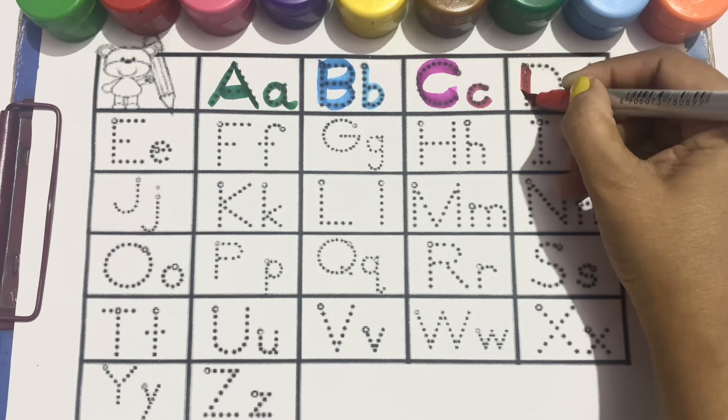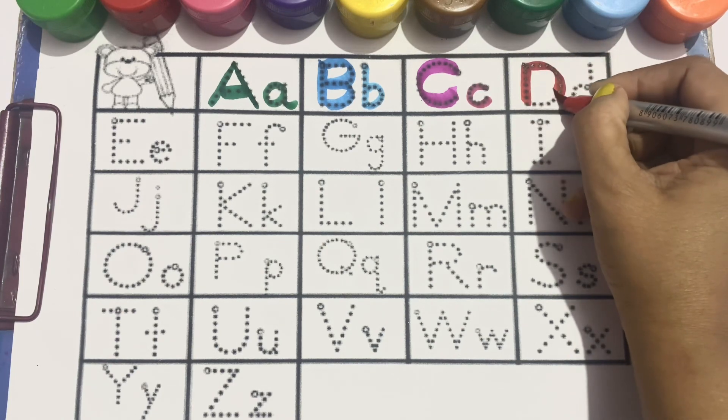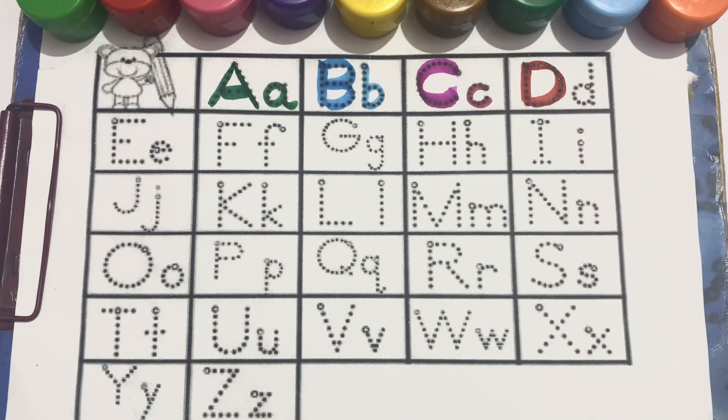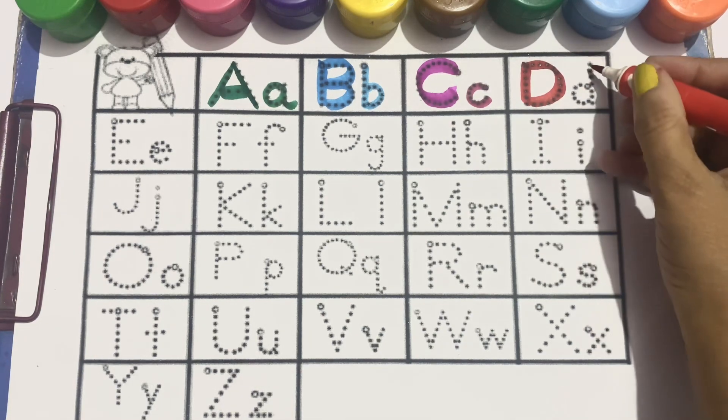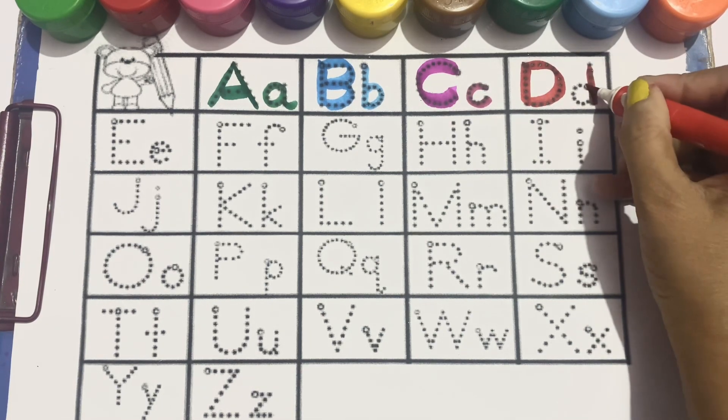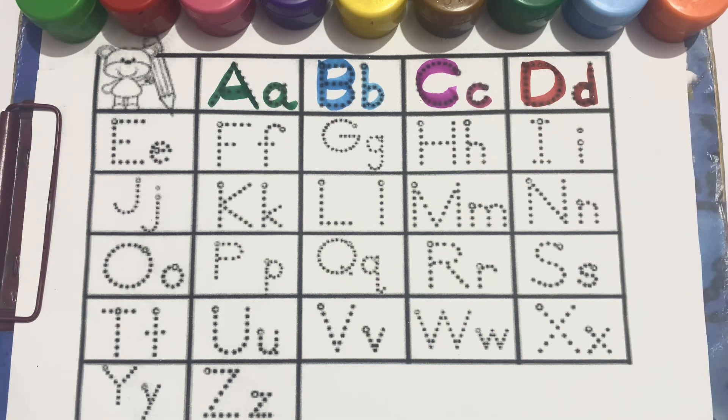Red color, D, capital D. Now, we will write small letter, small d.